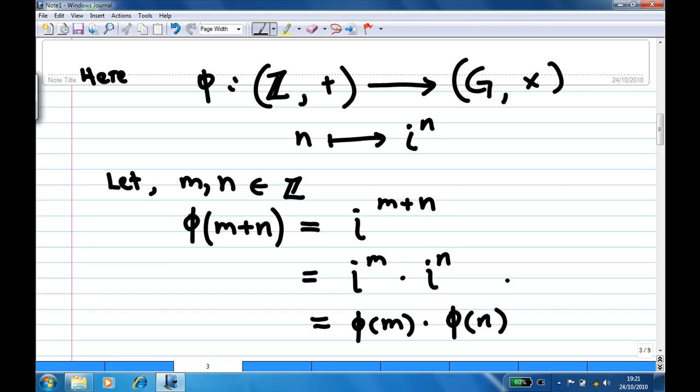So we have verified that the mapping satisfies the homomorphism property. This verifies that φ is a group homomorphism.